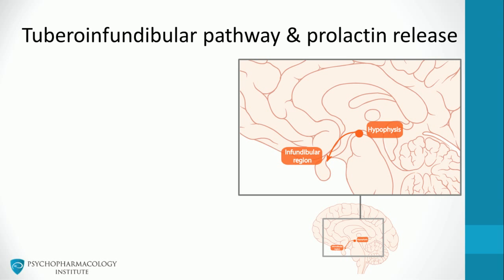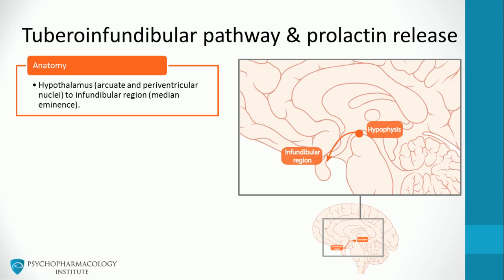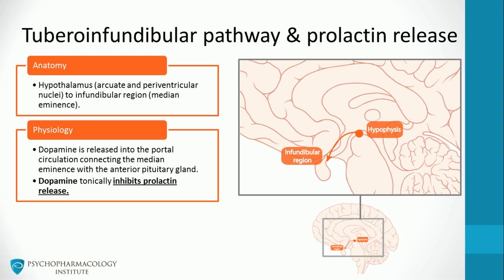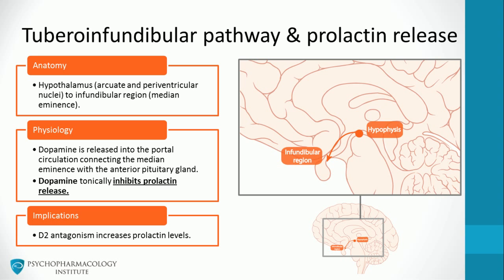Dopaminergic projections in the tuberoinfundibular pathway influence prolactin release. This tract consists of dopaminergic projections from the hypothalamus, more specifically the arcuate and periventricular nuclei, to the infundibular region, also in the hypothalamus, or median eminence. Dopamine is released into the portal circulation connecting the median eminence with the anterior pituitary gland. The role of dopamine released in the tuberoinfundibular pathway is to tonically inhibit prolactin release, so blockade of D2 receptors by drugs such as antipsychotics increases prolactin levels.